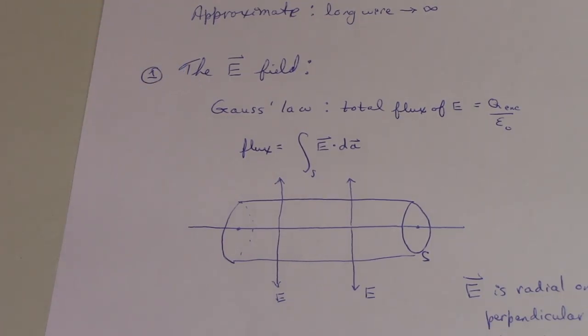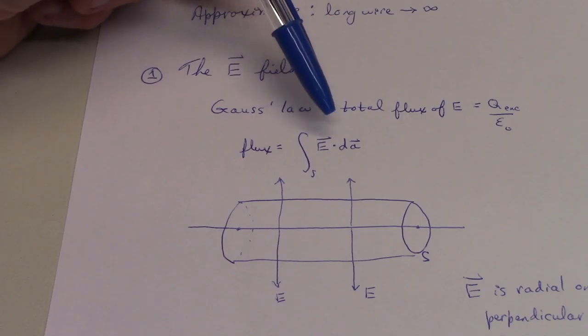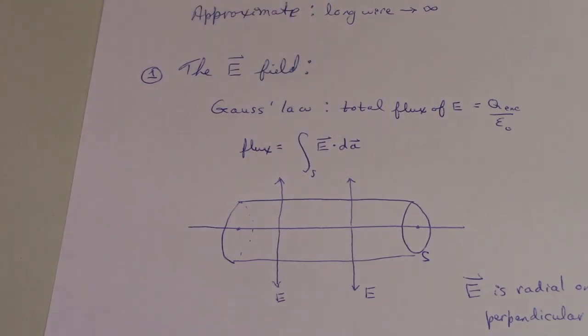We're going to use Gauss's law. Gauss's law says that for a charged conductor, if you surround that charge by an imaginary surface called a Gaussian surface, the total flux of the electric field through that surface equals the charge enclosed divided by epsilon naught. Put mathematically, the flux equals the surface integral of E dot dA.